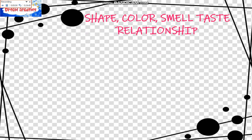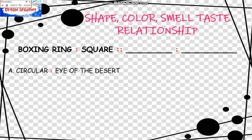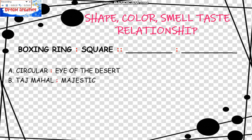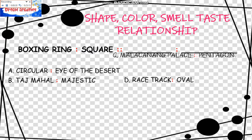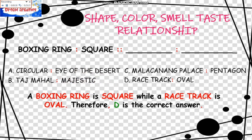Shape, Color, Smell, Taste Relationship. The example is: Boxing Ring is to Square as blank is to blank. The choices are: A, Circular is to Eye of the Desert; B, Taj Mahal is to Majestic — but Majestic is not an adjective for a shape; C, Malakanyang Palace is to Pentagon; D, Racetrack is to Oval. A boxing ring is square while a racetrack is oval. Therefore, D is the correct answer.